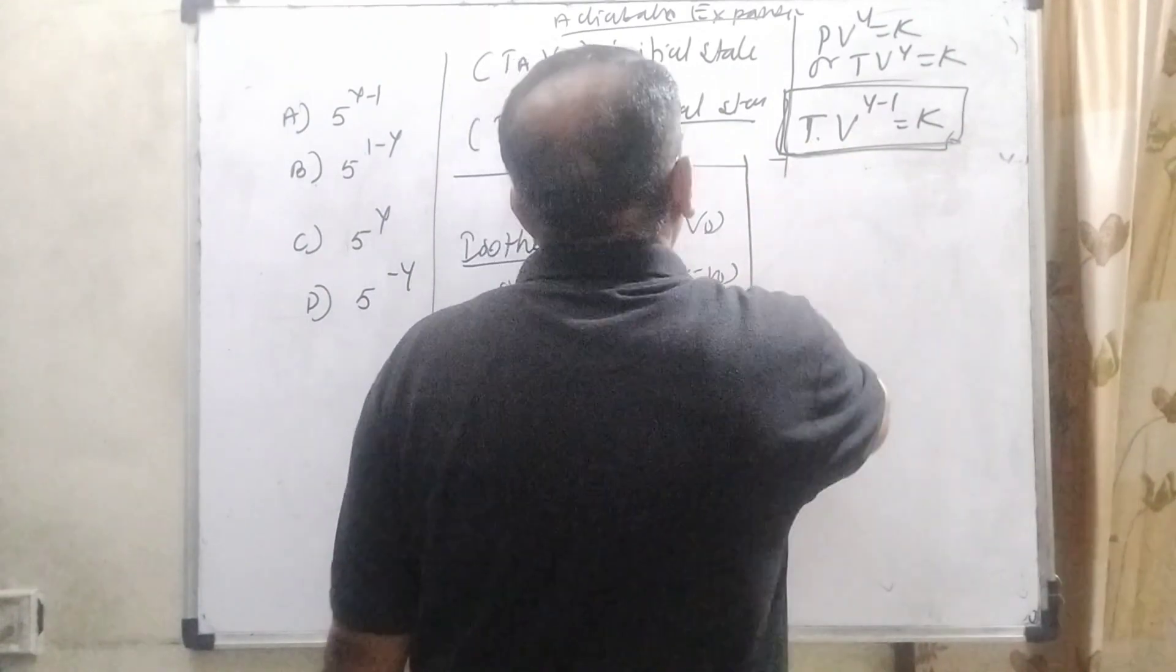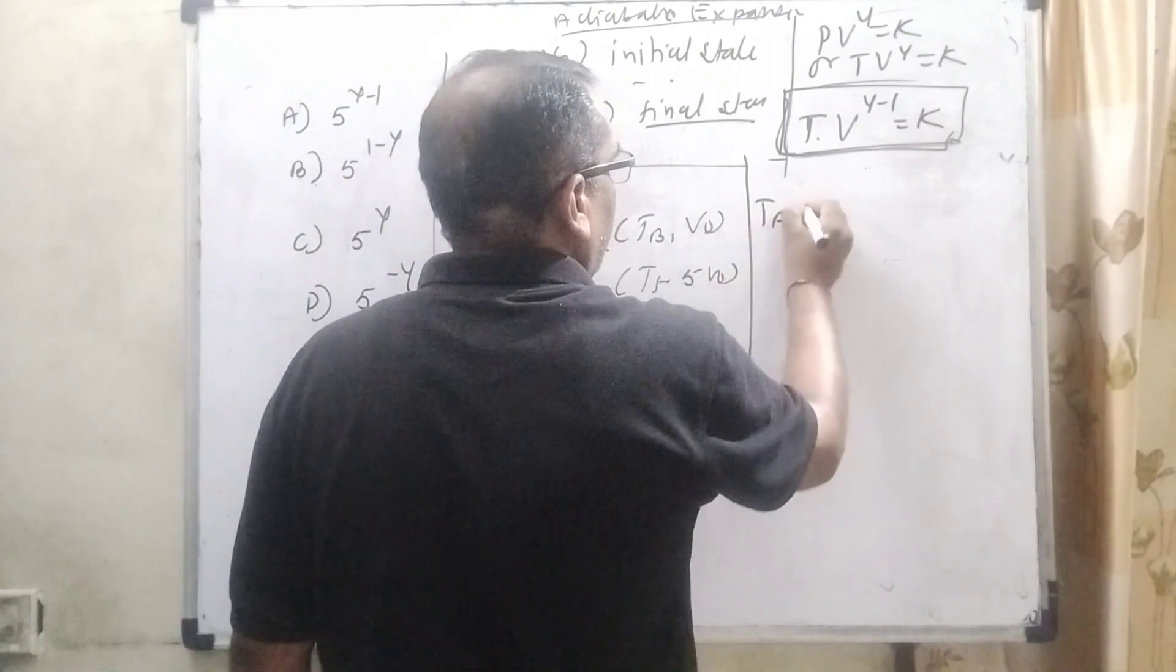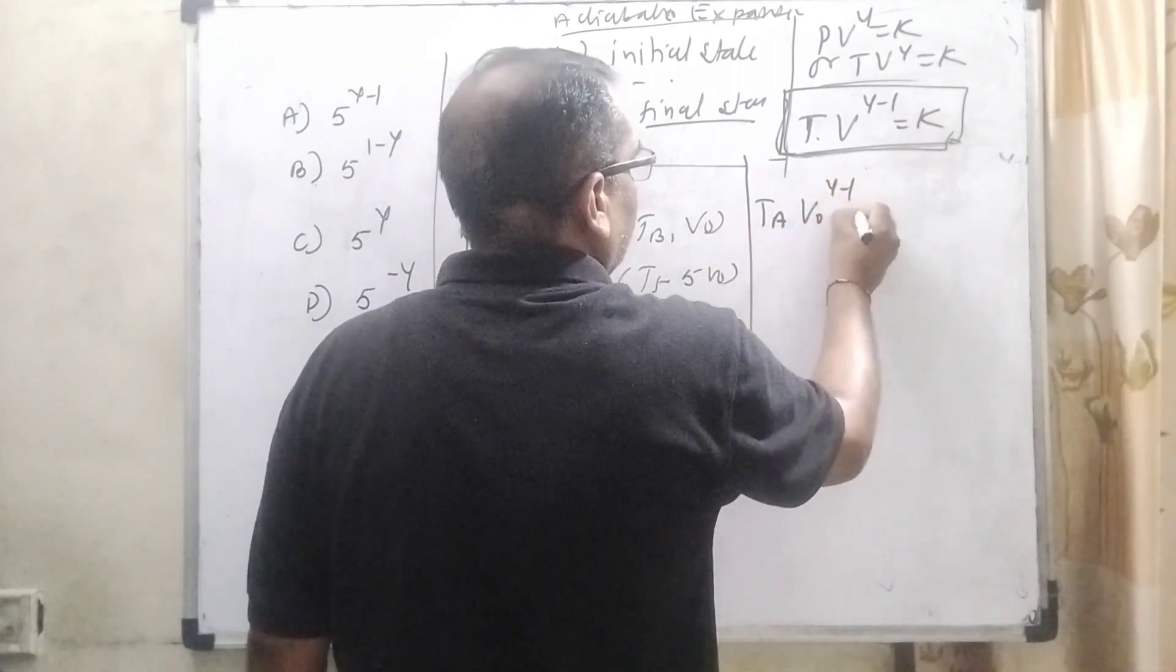Then for the first stage, the initial state is given as (TA, V0). So substitute this value: TA times V0 raised to the power (gamma minus 1) equals...